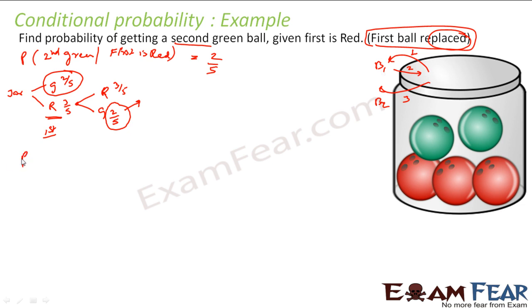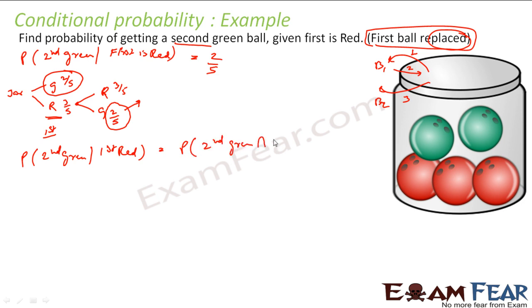Let's also solve this using the formula. The formula says: the probability of getting the second green given the first is red equals the probability of the intersection of second green and first red, divided by the probability of first red.